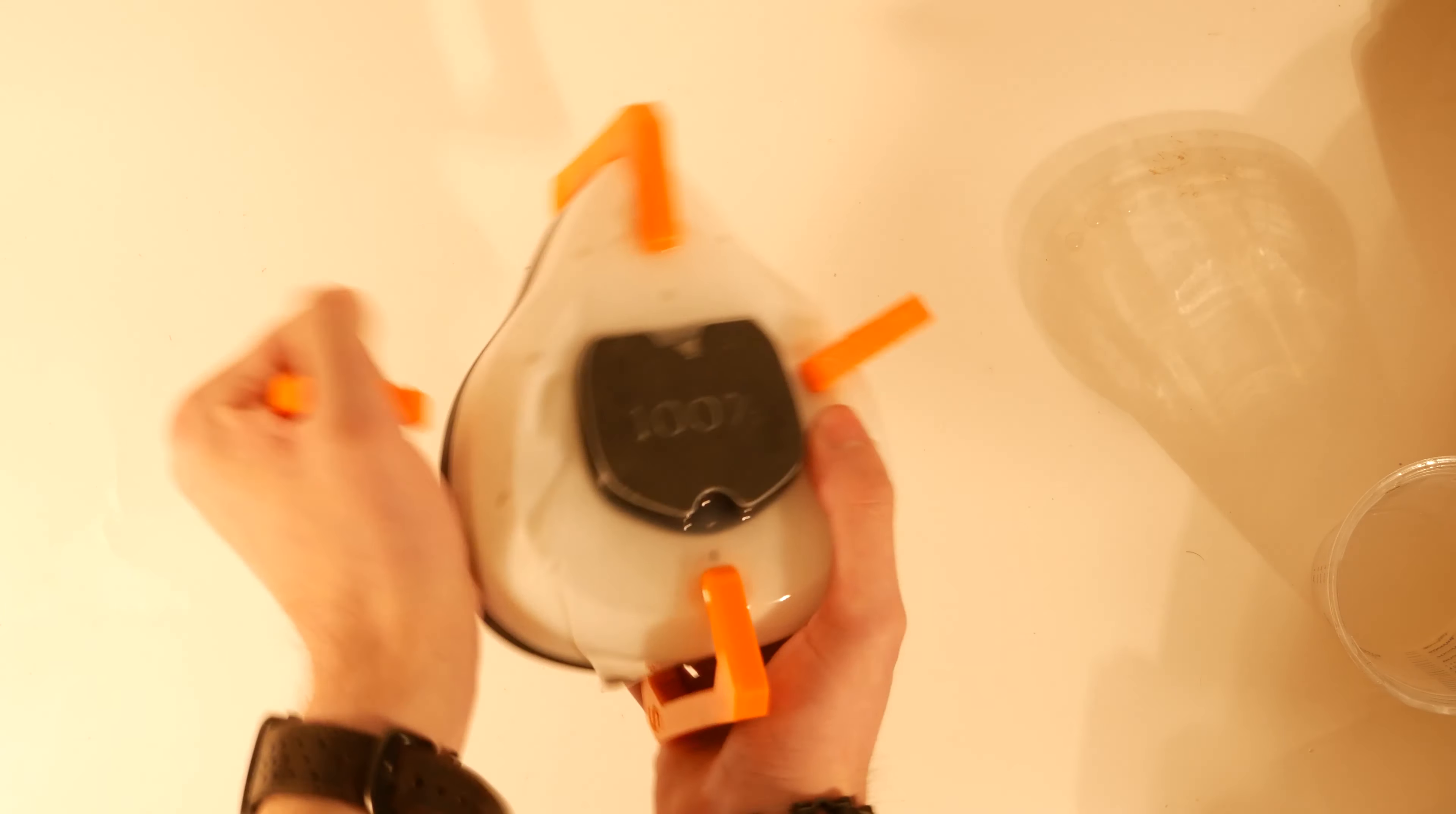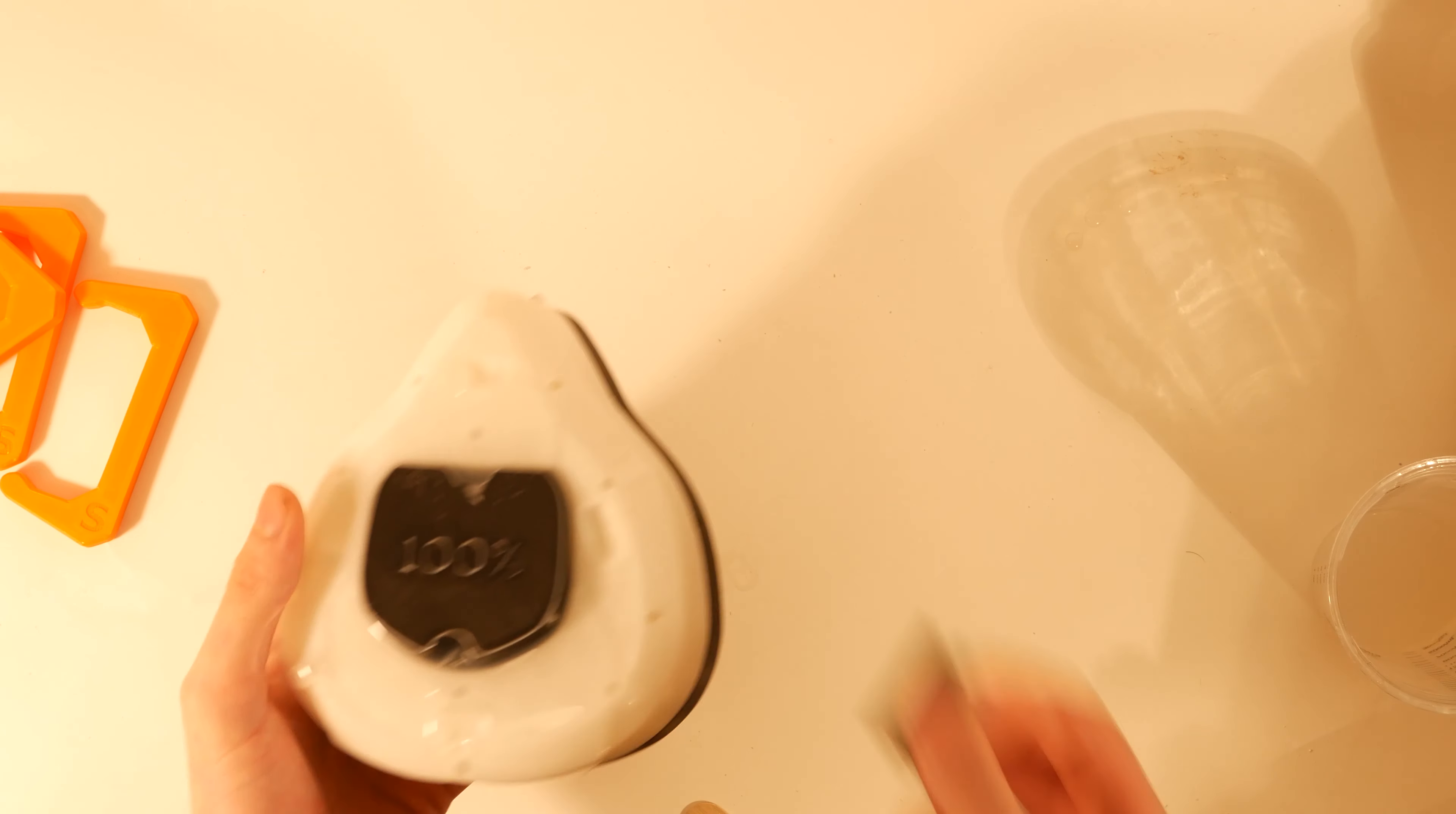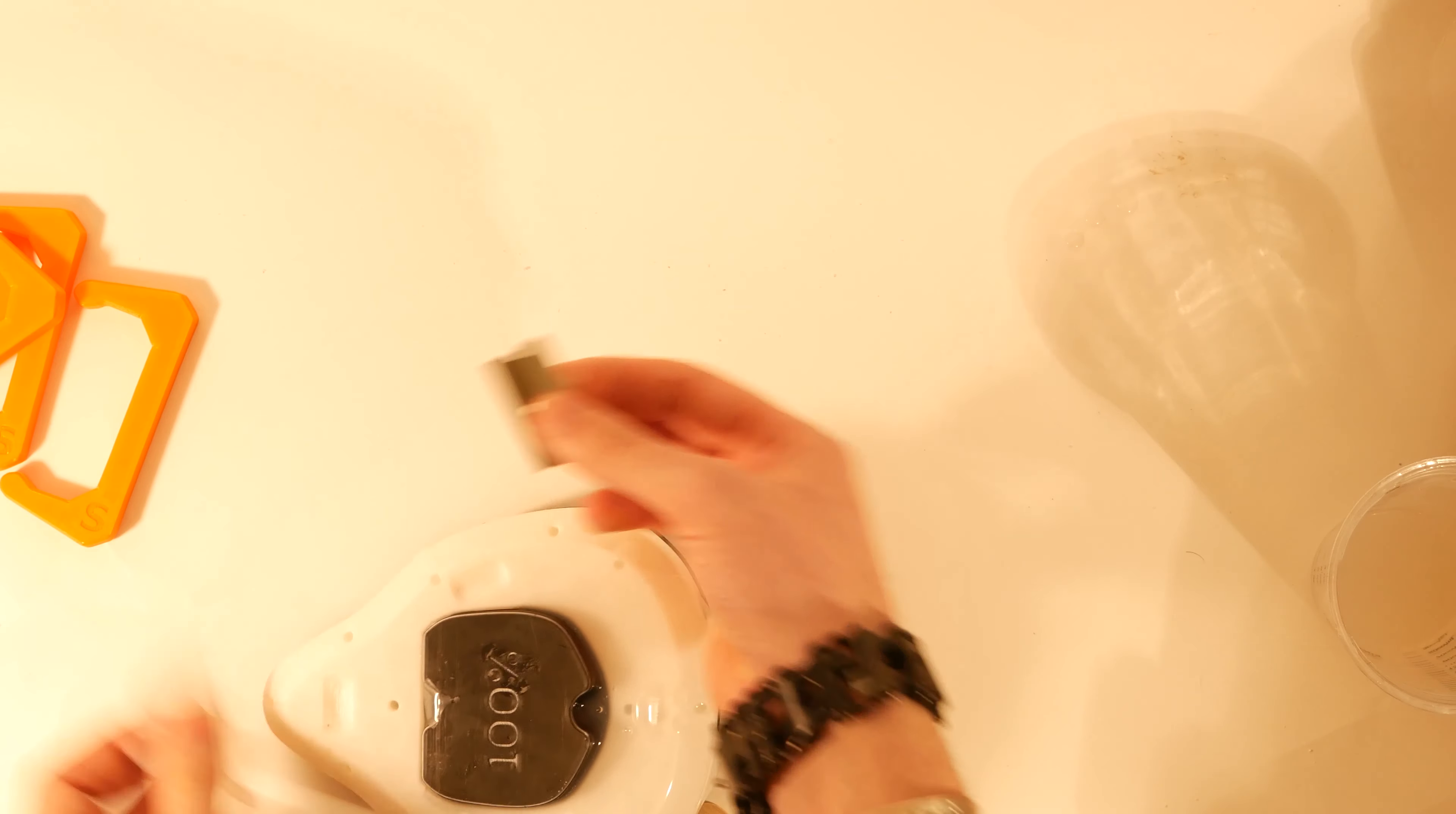Start by taking your side clamps off. And now you're going to get a razor and you're going to cut around the perimeter of this mouth insert. Just like this. And it should be fairly easy.